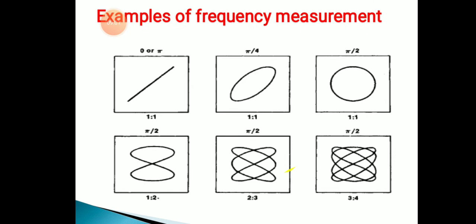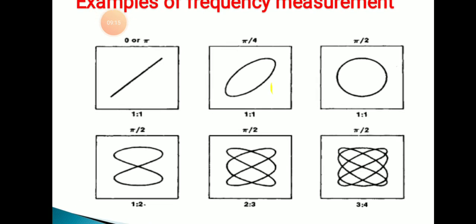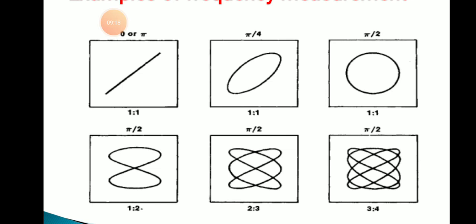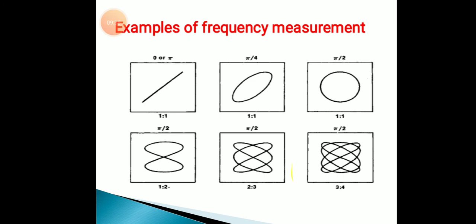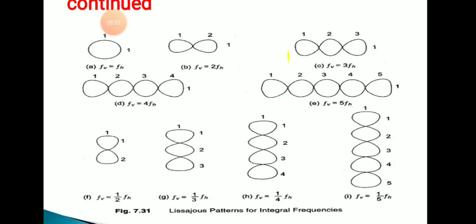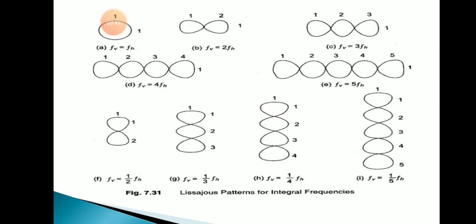Some examples related to frequency measurement: at phase 0 or pi, the frequency ratio is 1:1. At pi/4, the ratio is 1:1. At pi/2, ratio is 1:1. For ratio 1:2, the number of vertical tangents is 2 and horizontal tangents is 1. For ratio 2:3, horizontal tangents are 2 and vertical tangents are 3. For ratio 3:4, horizontal tangents are 3 and vertical tangents are 4.